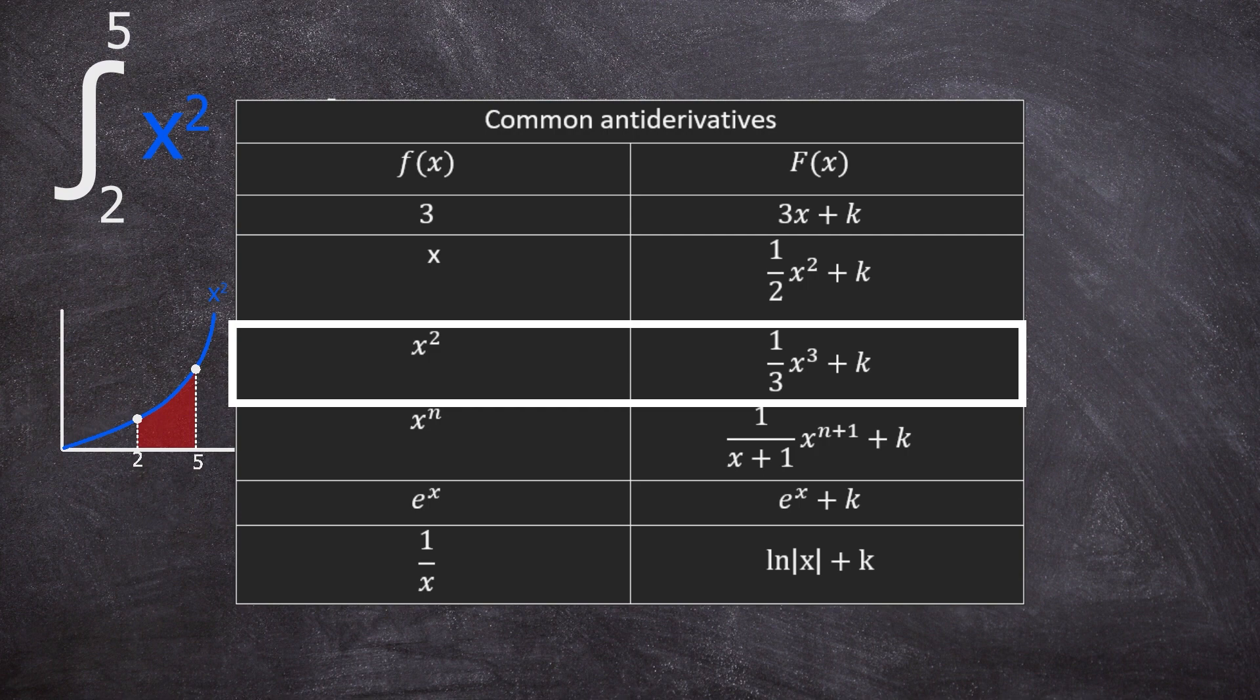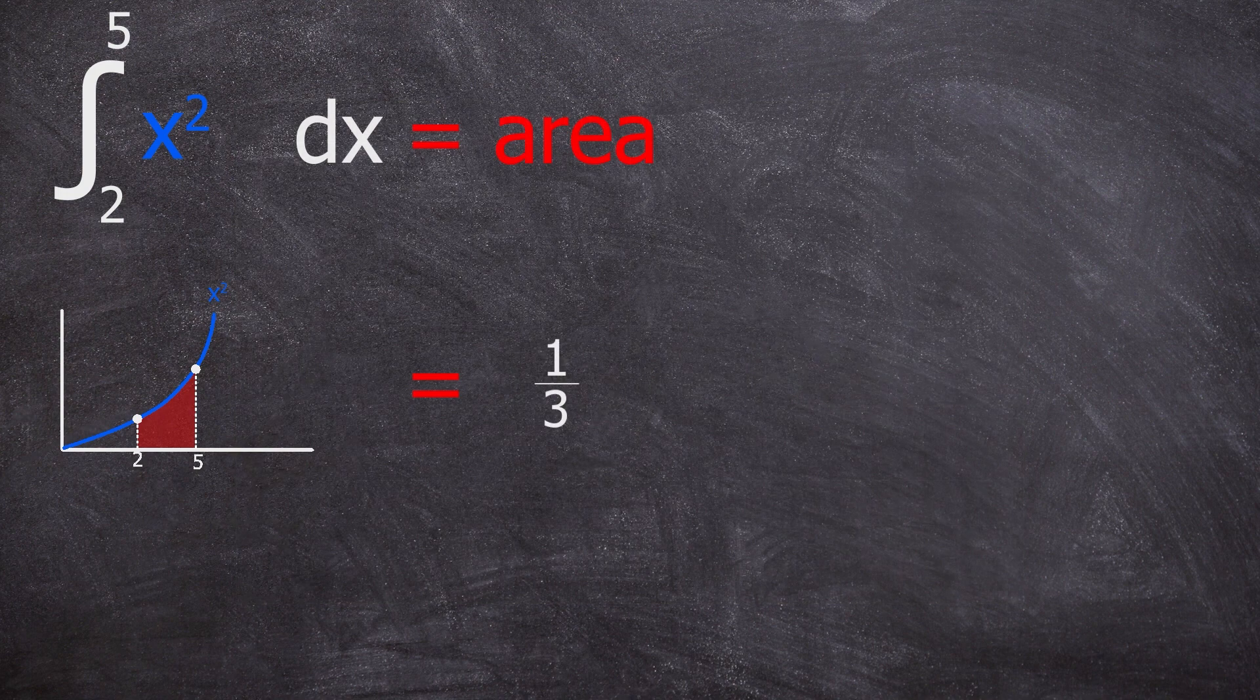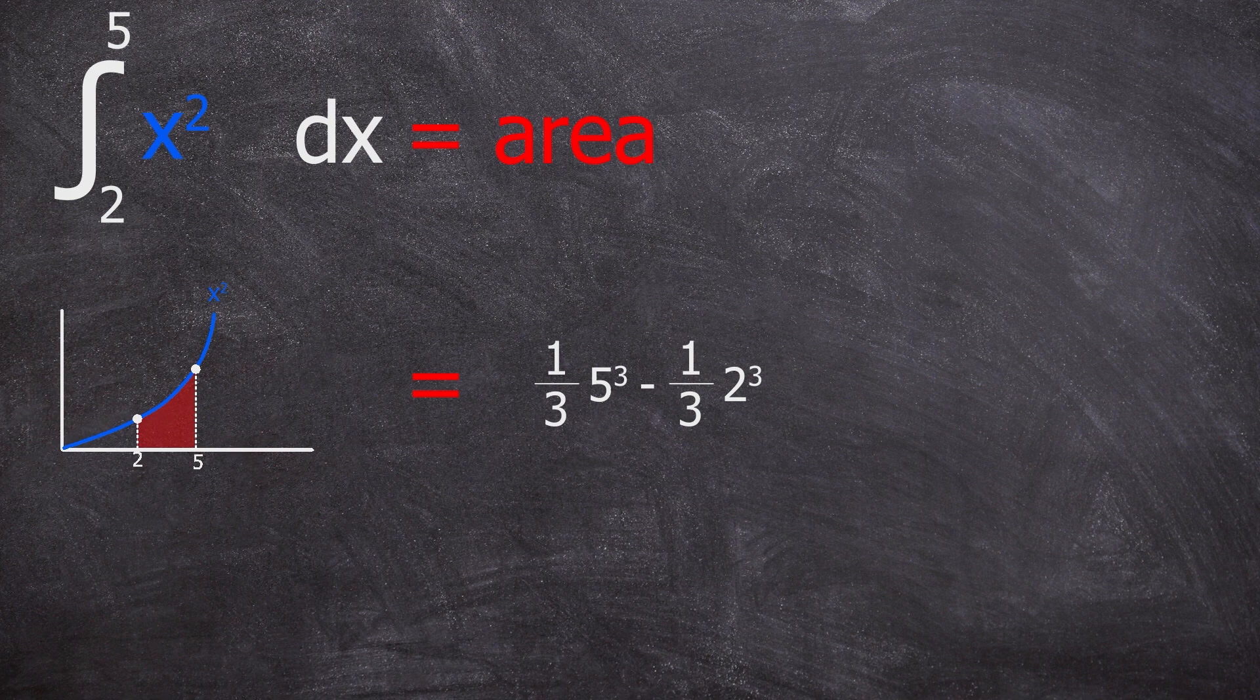Then we are going to replace x with 5 and 2 in the equation like this. Calculating this, we get 41.7 minus 2.7, which equals 39.